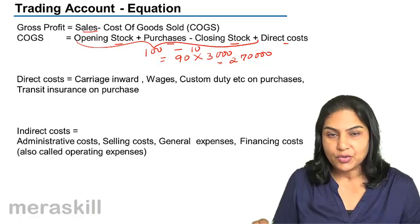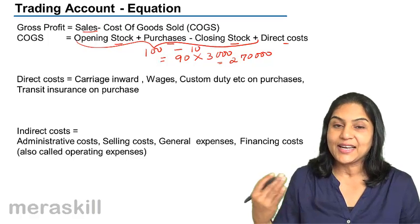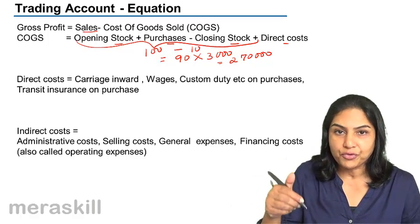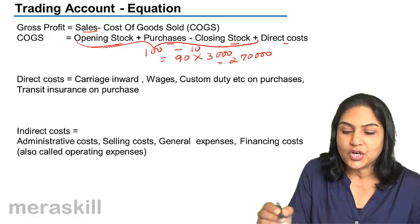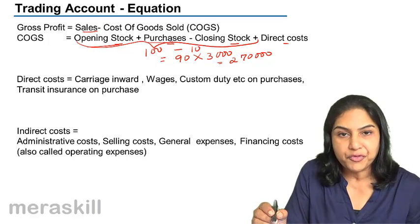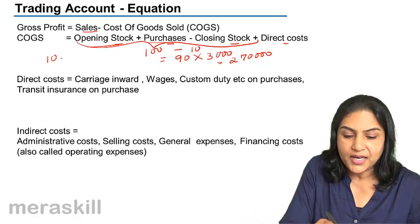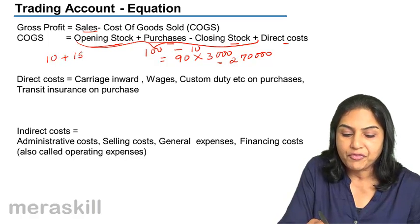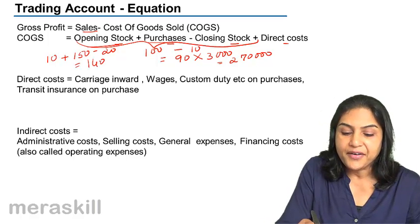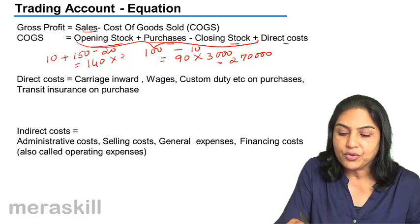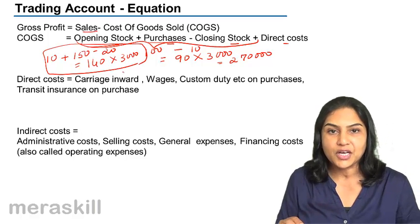If we have an opening stock — what is opening stock? The closing stock of this year is the stock we were not able to sell; we will sell it next year. The closing stock of today becomes the opening stock of the next year. In the next year, we will have an opening stock of 10, maybe buy another 150 and not sell 20, so we sell 140 phones, making a gross profit of 3,000 per phone.